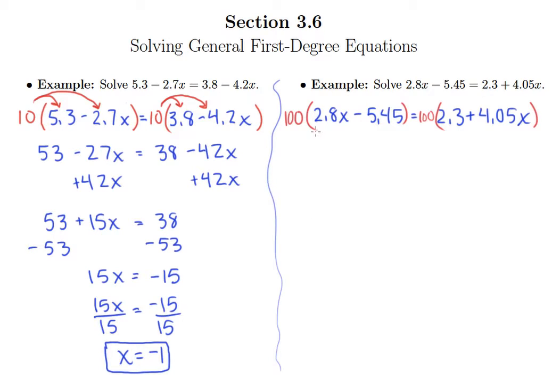Now, when we do that, we got to be careful. So even though 2.8 only has one digit to the right of the decimal point, we still need to move the decimal two places because I'm multiplying it by 100. So you have 2.8, so the decimal point moves over one, but then it moves over one more, so we better add a zero there. So we end up with 280x minus 545, equals, decimal point moves over two, 230 plus 405x.